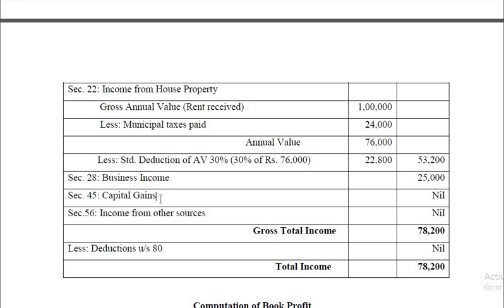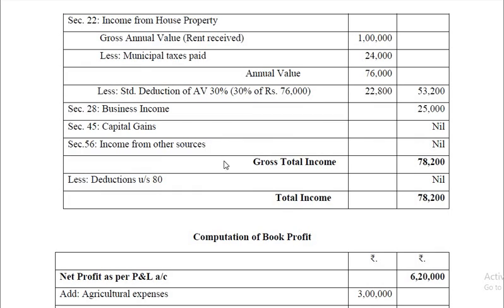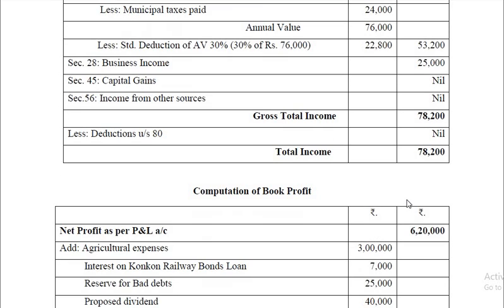Capital gains and income from other sources are not given in the problem. Gross total income is the total of business income and house property income. There are no deductions under Section 80, so total income is 78,200. That completes the computation of business income and total income.